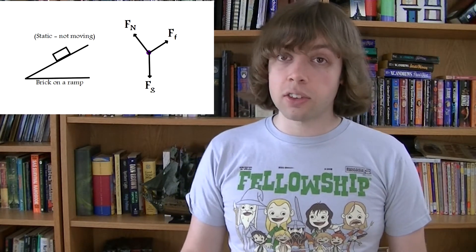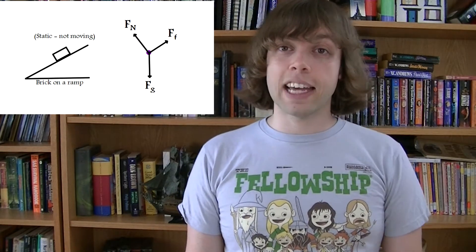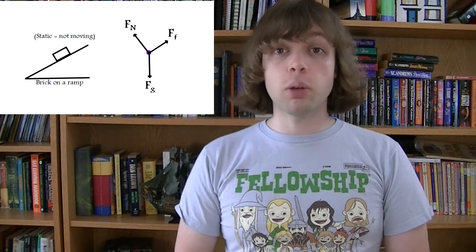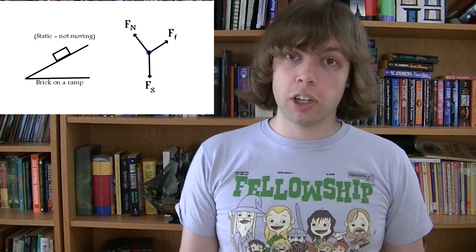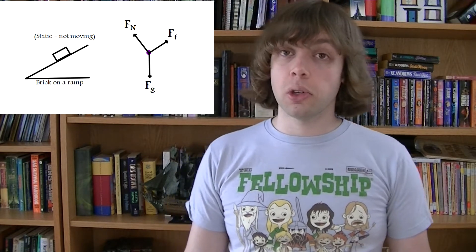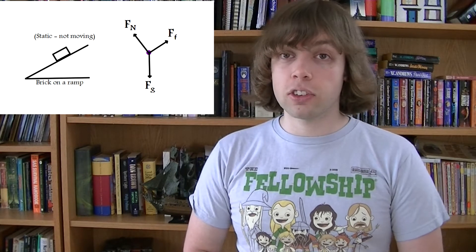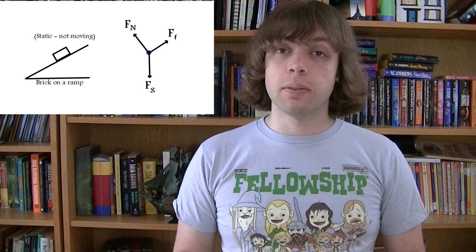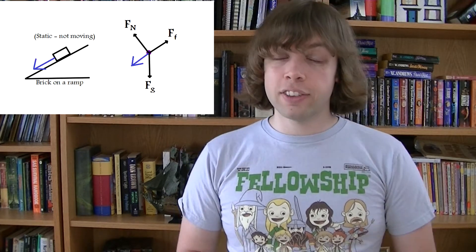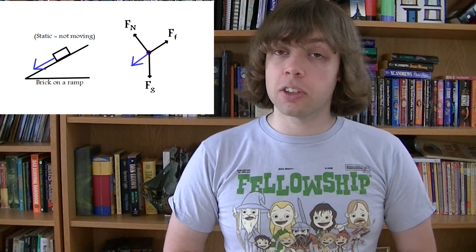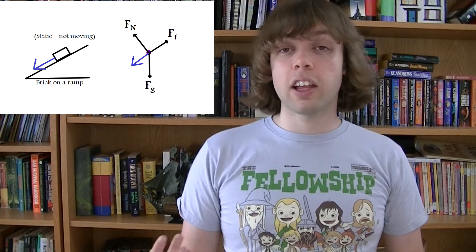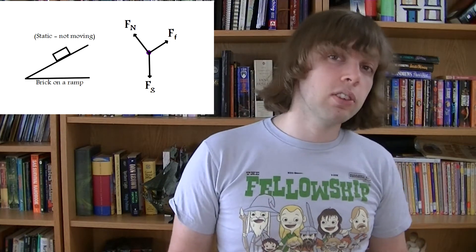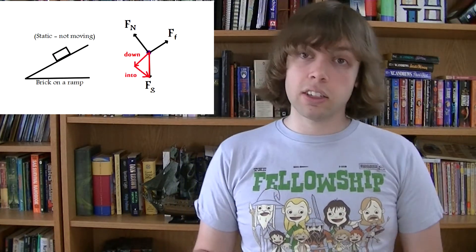Let's say a ball is rolling down a hill at constant speed. The forces acting on the ball would look something like this. We have the force of gravity acting straight down, we have the frictional force acting up the plane — although it could also be a situation with no friction — and we have the normal force acting at a right angle to the surface. Notice that there is no force acting down the plane. The reason it rolls down the hill is because of gravity, which acts partly down the slope and partly into the slope.